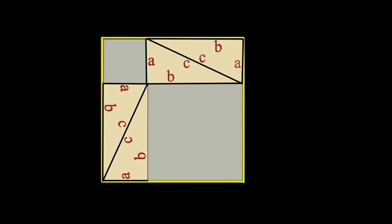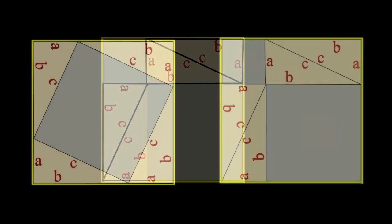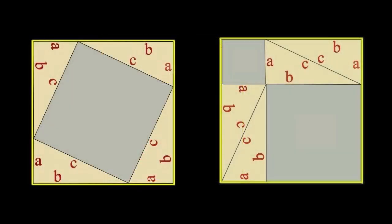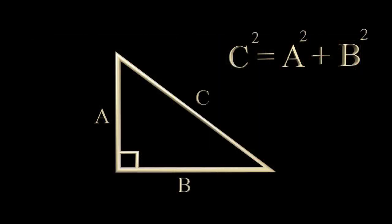The solution requires making a statement about the area of the squares involved in both configurations, a statement that confirms C squared equals A squared plus B squared. Pause the video if you are interested in attempting this proof yourself. If not, let's move on to Pythagoras.